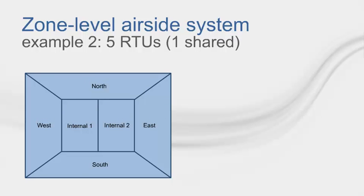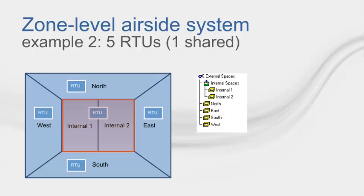For the second example, we are going to have one RTU serve two rooms. You will need to put both spaces you wish to have conditioned by the same RTU under one zone. Also remember that since all of these zones are under the same system, they all share a plenum.